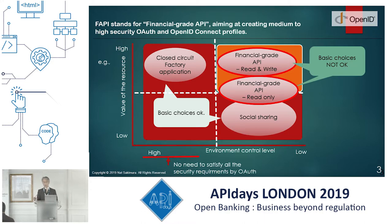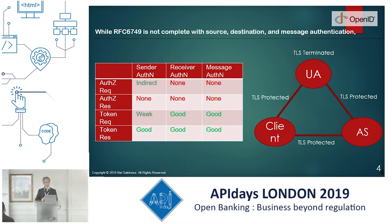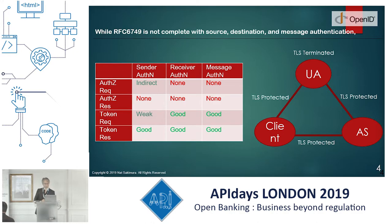But in the case of financial transactions, medical transactions, or something like that, you actually need to be very careful about what you're using. You have to pick the right options. People usually talk about RFC 6749 and RFC 6750. The problem with RFC 6749 is that it's not complete with source, destination, and message authentication. In the case of the authorization request, sender authentication is there if you're using a confidential client with code flow, but there's no receiver authentication or message authentication.